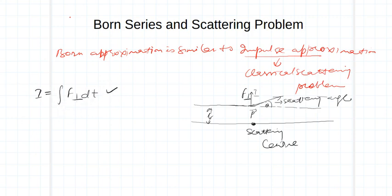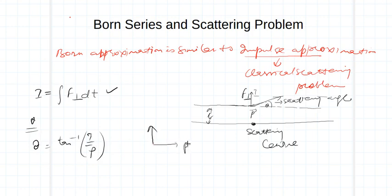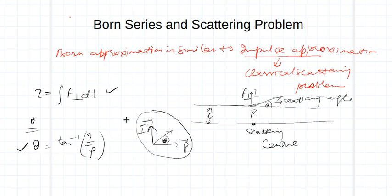The transverse impulse is defined as I equal to the integral of the transverse component of force over time. If the deflection theta is small, then theta can be estimated as tan inverse of I over p, because the impulse is acting along the transverse direction and the momentum p is along the initial direction.